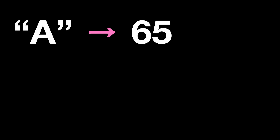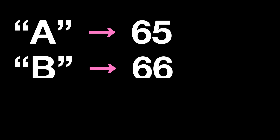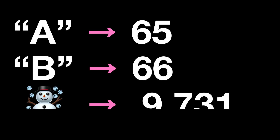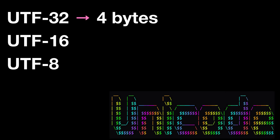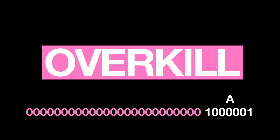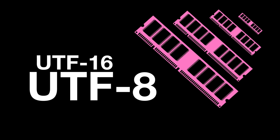We can say that 65 stands for A, and 66 for B, or 9731 stands for the snowman symbol. There are many versions: UTF-32 encodes 4 bytes per character, meaning it can represent over 1.1 million characters, but sometimes 32 bits is overkill. To save space, they prompted for variable-length encoding, like UTF-16 or the standard UTF-8.